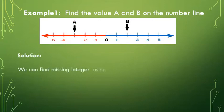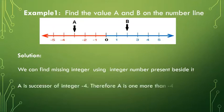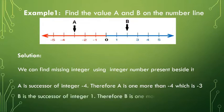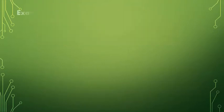Our solution: we can find the missing integer using the integer number present beside it. A is the successor of integer minus four, therefore a is one more than minus four, which is minus three. B is the successor of integer one, therefore b is one more than one, which is two.